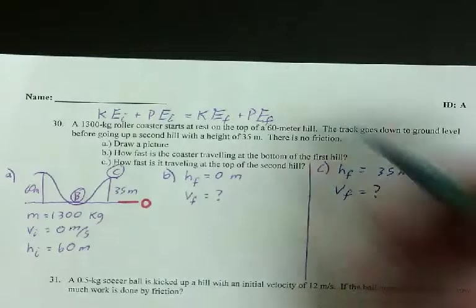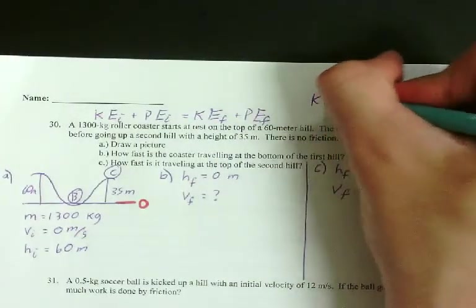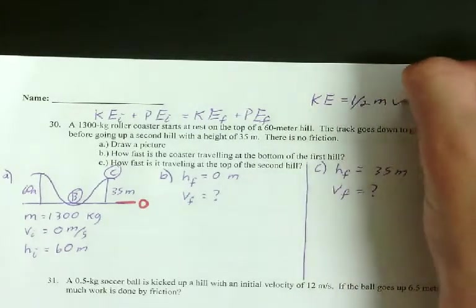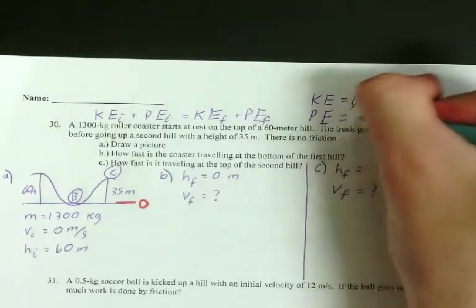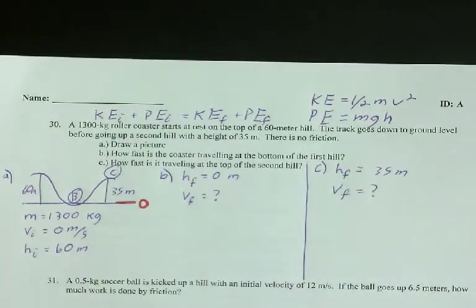Remember, you need to find KE and PE, and the way you do that, KE is one-half m v squared. And I'm just getting these from the equations. PE is mgh. All right. Go ahead and see if you can solve B and C.